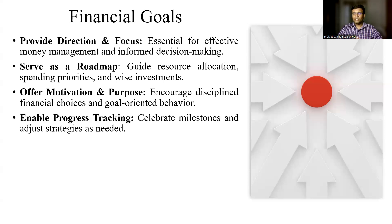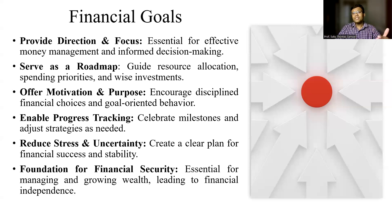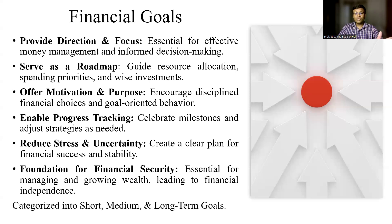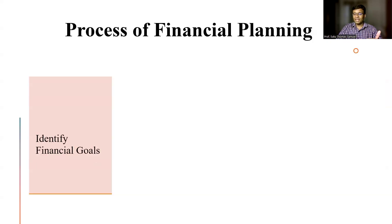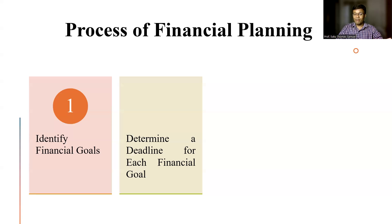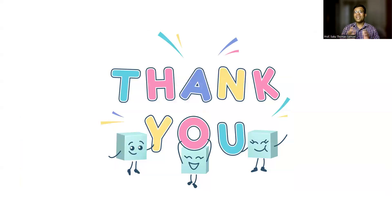When we have financial goals defined and in place, it helps us to track our progress. Overall, it helps us to reduce our stress and uncertainty, and it gives us a sense of financial security — knowing that we have sufficient amount of money in place. Financial goals can be categorized into three types: short-term goals, medium-term goals, and long-term goals. The process of financial planning involves: first, identify a goal; second, determine the deadline for each goal; third, determine the duration needed; and finally, determine the significance of these financial goals. With that, we've come to the end of this video on personal finance.